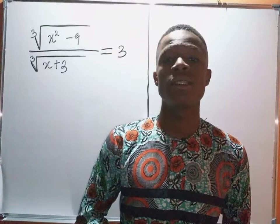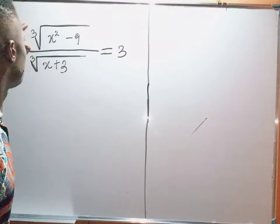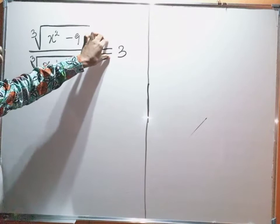So if you look at the board vividly well, you can see I have the cube root of x squared minus 9 divided by the cube root of x plus 3, equal to 3. And I'm required to find the value of x.